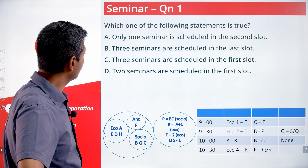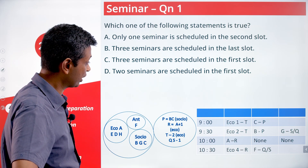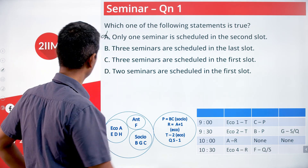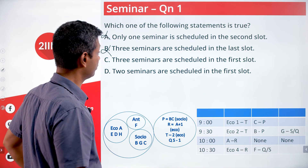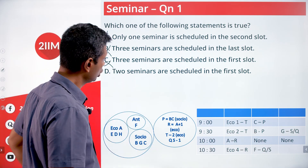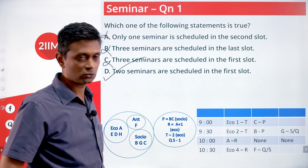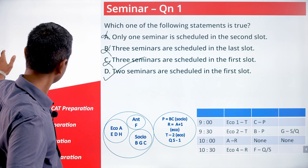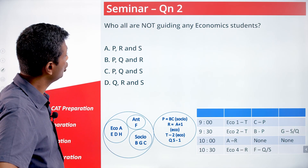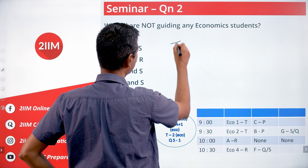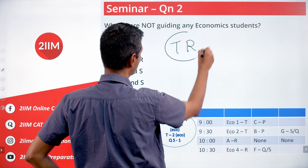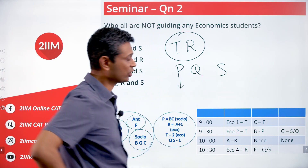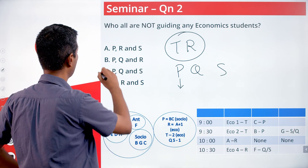Looking at the questions. Which of the following statements is true? Only one seminar is scheduled in the second slot — no, the second slot has three. Three seminars in the last slot — no, two. Three seminars in the first slot — no, only two. Two seminars are scheduled in the first slot — yes, that is correct: one economics by T and one sociology by P. Who are not guiding any economics students? T and R guide economics students. P, Q, and S do not — P guides sociology; Q and S guide sociology and anthropology respectively.